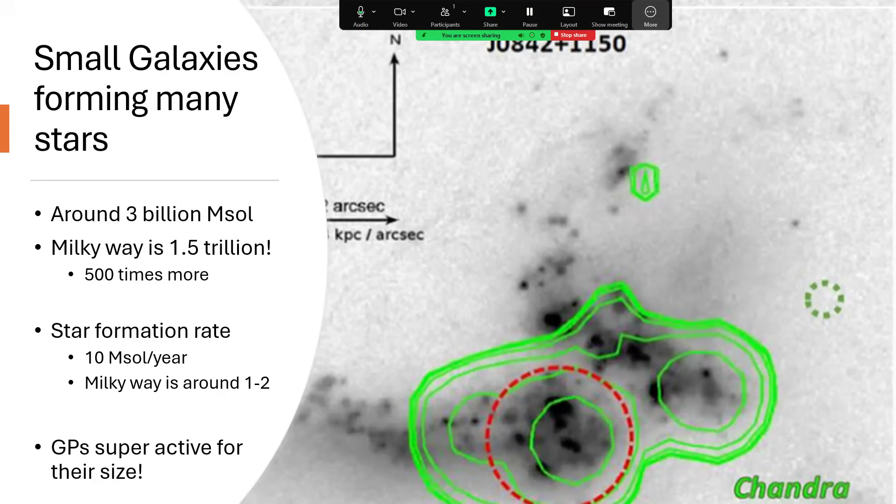Yet fascinatingly, they are forming stars at a prodigious rate. The star formation in a typical Green Pea is around 10 solar masses worth per year, and in the Milky Way it's somewhere in the range of 1 to 2 solar masses per year. So this is 5 to 10 times more star formation despite the fact there's 500 times less mass. So these are incredibly active formers of stars for their size.